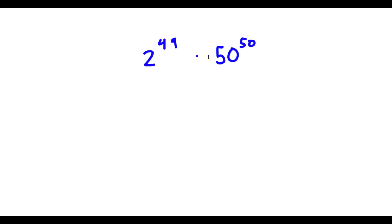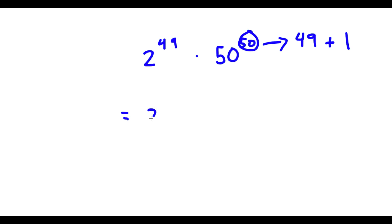Alright, so I have 2 to the power of 49 times 50 to the power of 50. Now, first off, our exponent 50 here, this is the same thing as 49 plus 1. So now I'm going to rewrite this exponent as 49 plus 1. So now I have 2 to the power of 49 times 50 to the power of 49 plus 1.